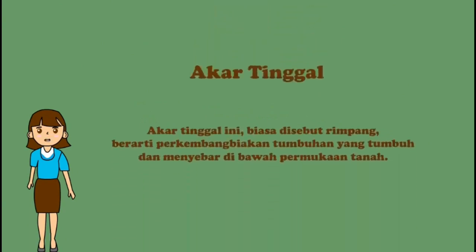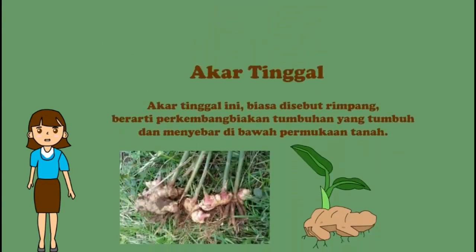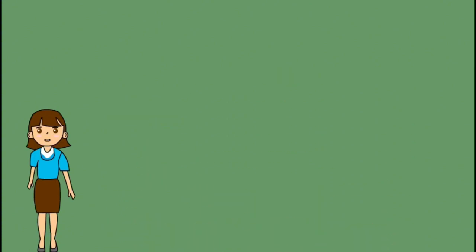Yang ketujuh, akar tinggal, biasa disebut rimpang. Berarti perkembangbiakan tumbuhan yang tumbuh dan menyebar di bawah permukaan tanah. Contoh tumbuhan yang berkembang biak dengan menggunakan rimpang adalah jahe, temuas, kunyit, dan temulawak.